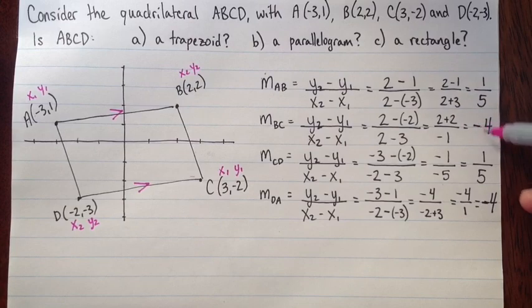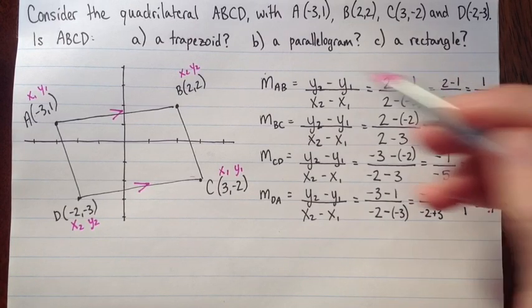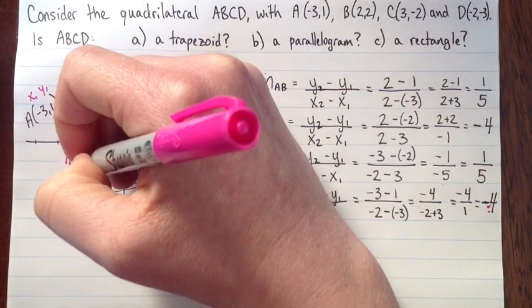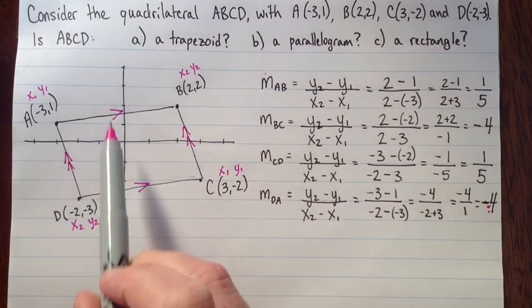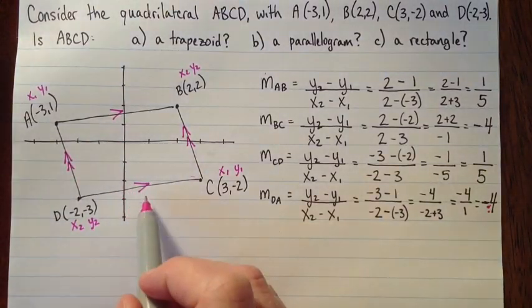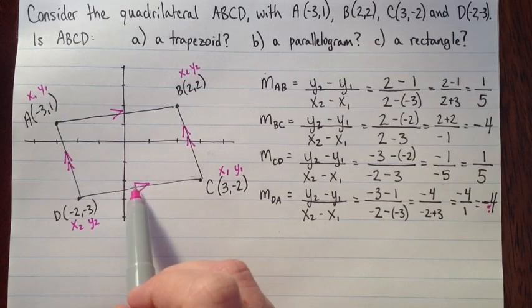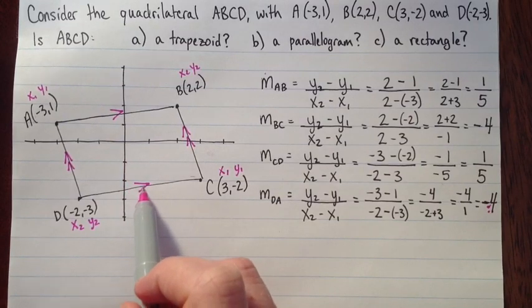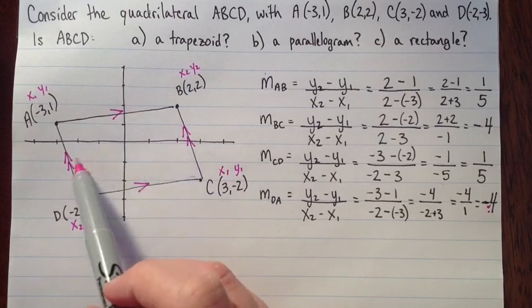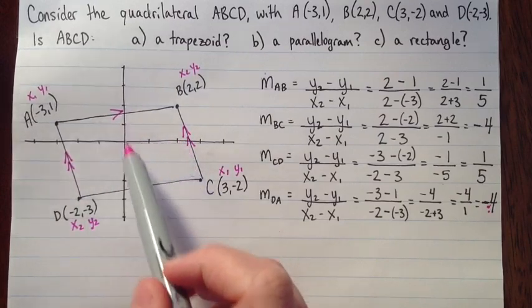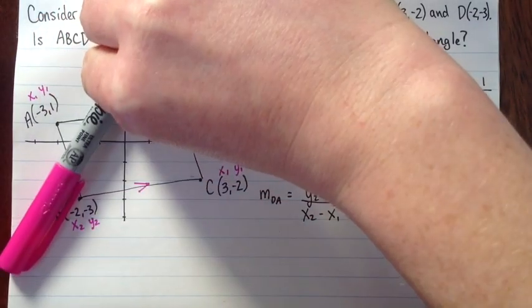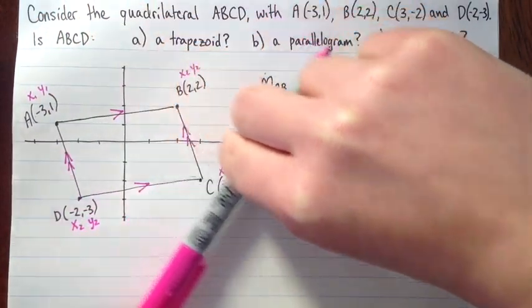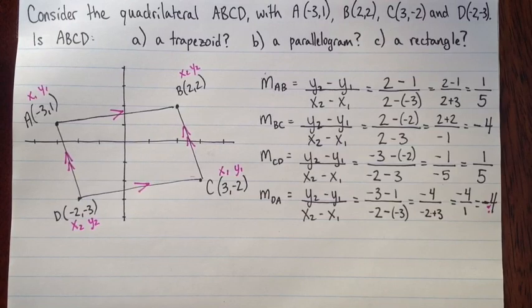Now we've got that the slope of BC is the same as the slope of AD. So this is perfect. That means these are parallel. Notice that my first set of parallel lines, I've used one arrow, and because these two lines are parallel to each other but not to the first two, I'll mark them with two arrows.